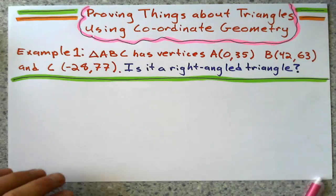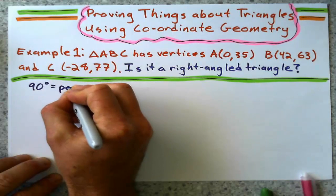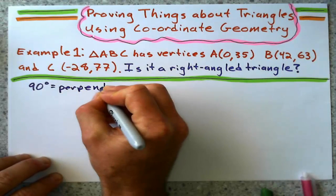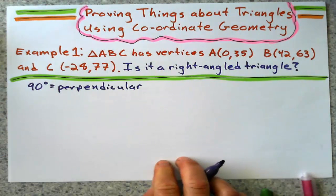So I'm going to have to prove if it's a right-angle triangle or not. We know that right-angled means 90 degrees, means perpendicular, and what do we know about perpendicular gradients?